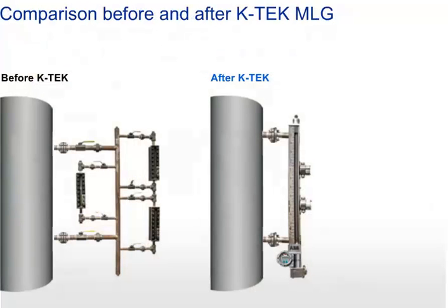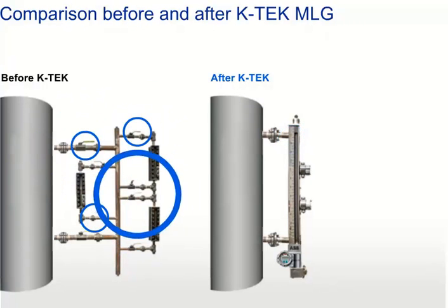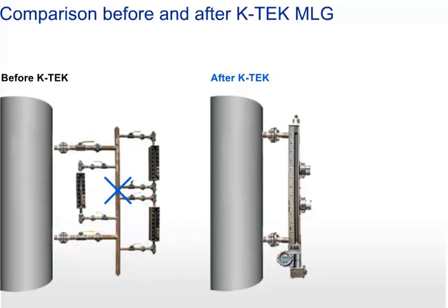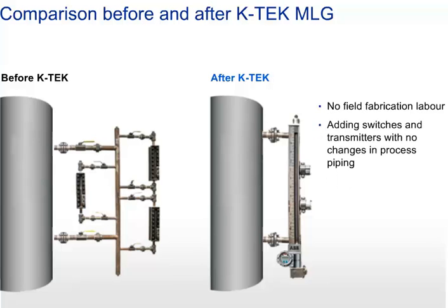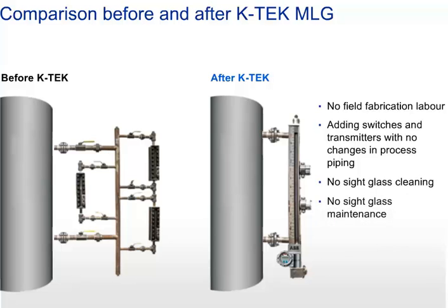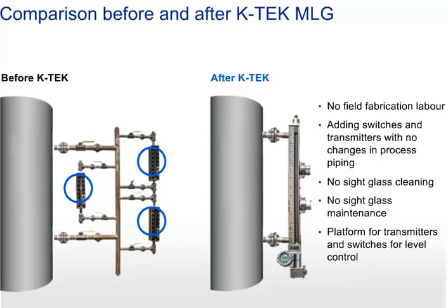Additional MLG advantages and cost savings include: continuous, highly visible level reading; fewer potential leak points for reduction of potentially hazardous fugitive emissions; simplification of design and installation; field fabrication labor is eliminated; switches and transmitters can be added with no changes in process piping; no longer need sight glass cleaning, and maintenance is virtually eliminated; start-up is simplified; sight glass bolt re-torquing to stop leaks is eliminated; and sight glass spare parts inventory and maintenance is eliminated.